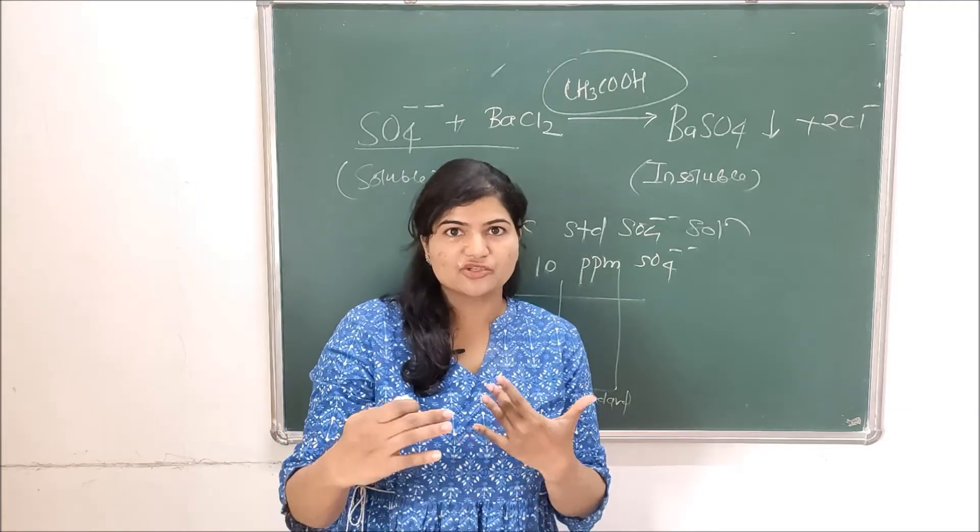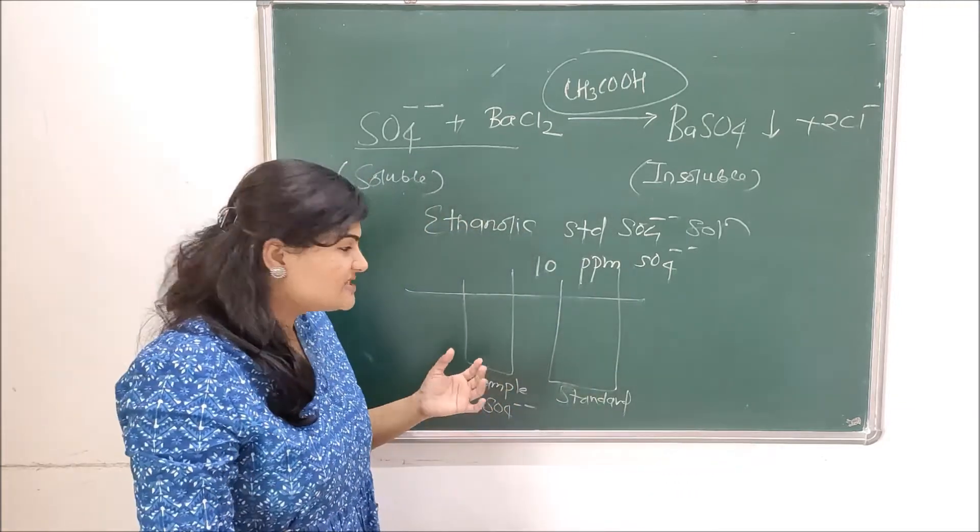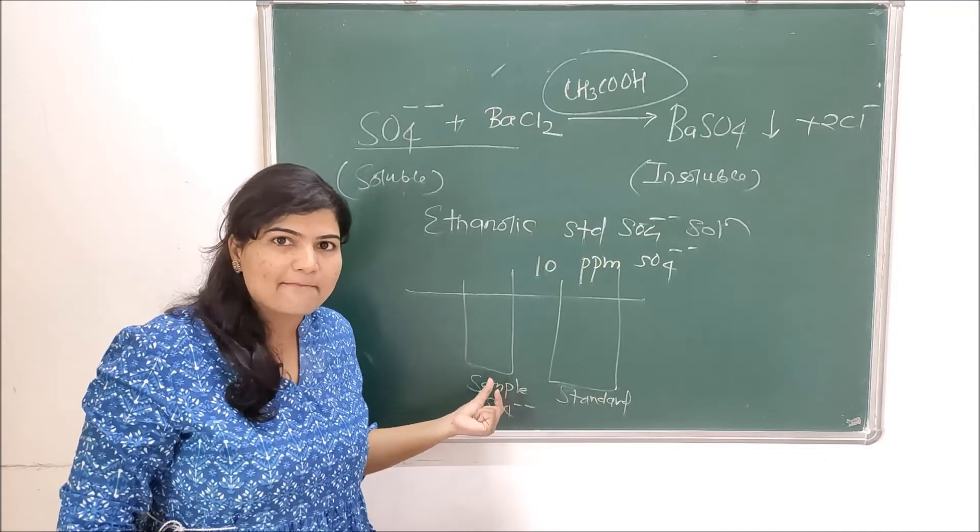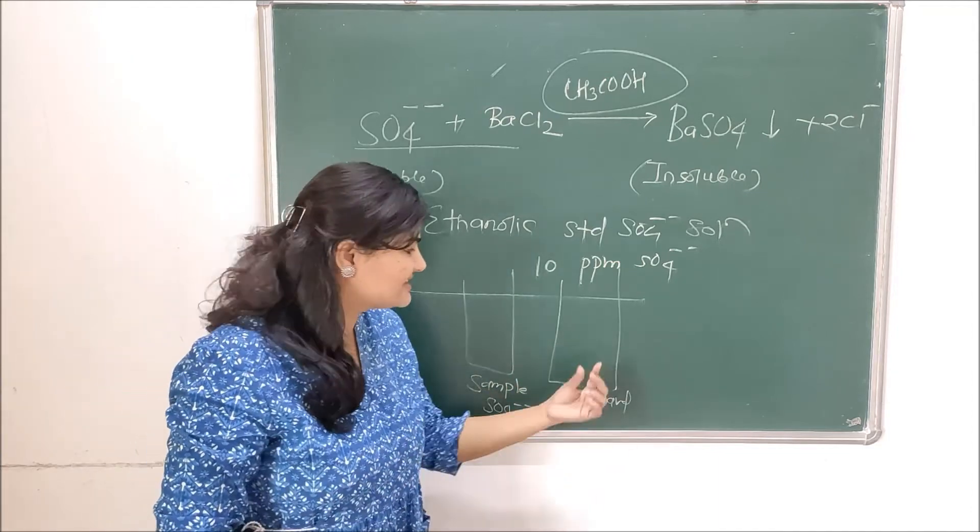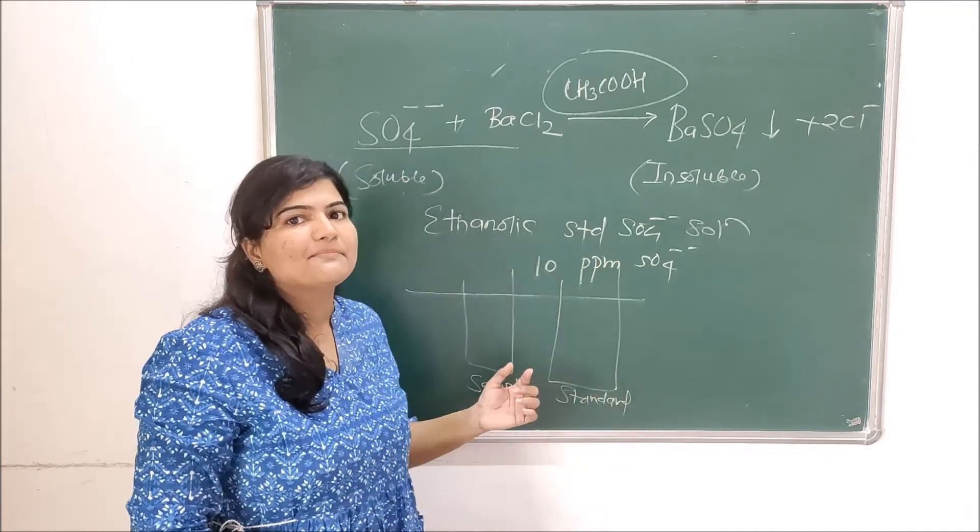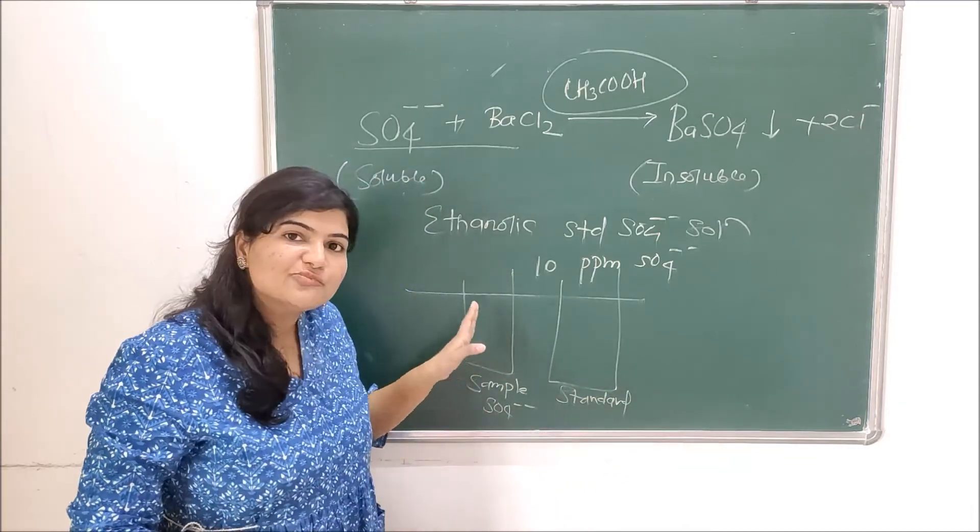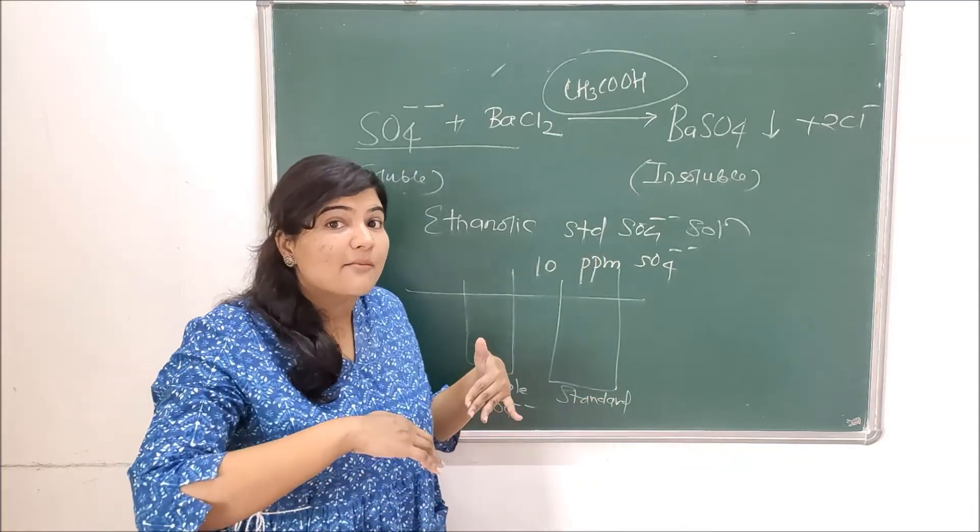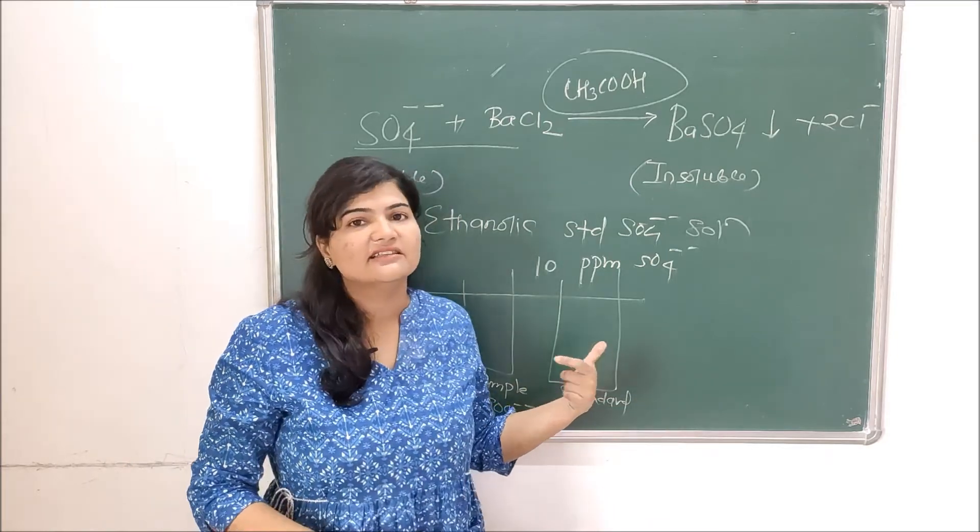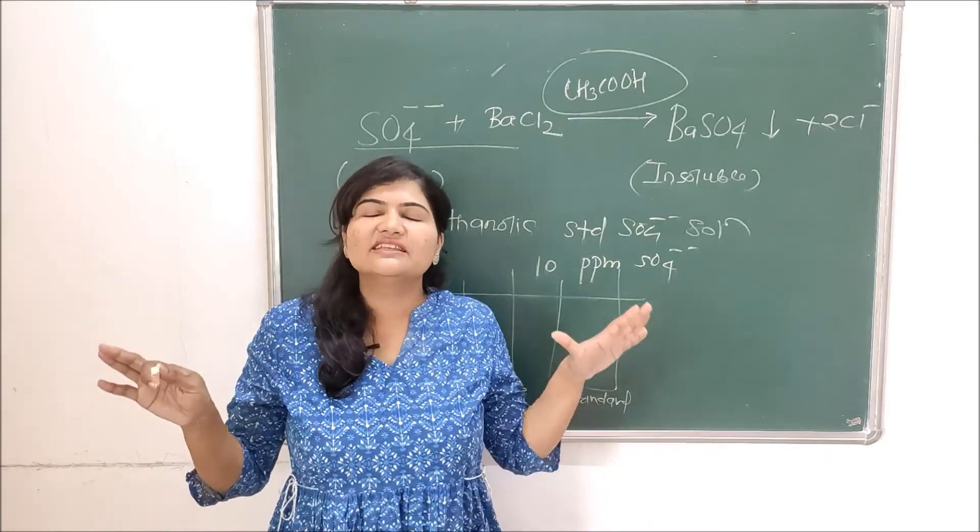We will compare the opalescence produced in both of them. If the opalescence produced in test or sample is less intense than the standard, the sample passes the limit test. If the opalescence produced in the test is more intense than the standard, then the sample is failing the limit test.